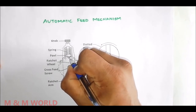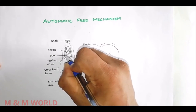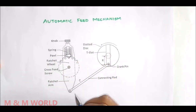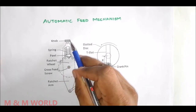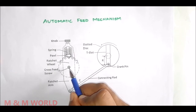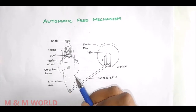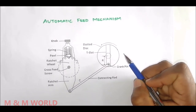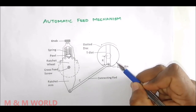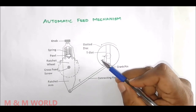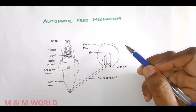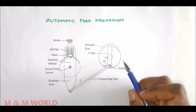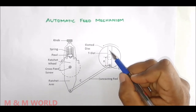The spring-loaded pawl has one straight end and one slanted end. On the top we have a knob, and this is the cross feed screw. The rotation of the bull gear causes the slotted disk to rotate — when the bull gear rotates, the slotted disk also rotates. The disk has a T-slot.